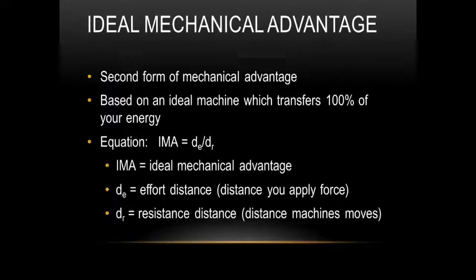There's also another type of mechanical advantage we need to be aware of. And that is the ideal mechanical advantage. So the ideal mechanical advantage is based on machines that transfer 100% of your energy. This is something that is not done. There's not actually a time when 100% of the energy is transferred. But that's what the ideal mechanical advantage is based on. We can make the assumption that the machine is 100% efficient. And we can go from that. So the equation that we would use would be IMA, ideal mechanical advantage, is equal to the effort distance, which is d_e, which is the distance you apply a force, divided by d_r, which is the resistance distance that the machine moves the object.